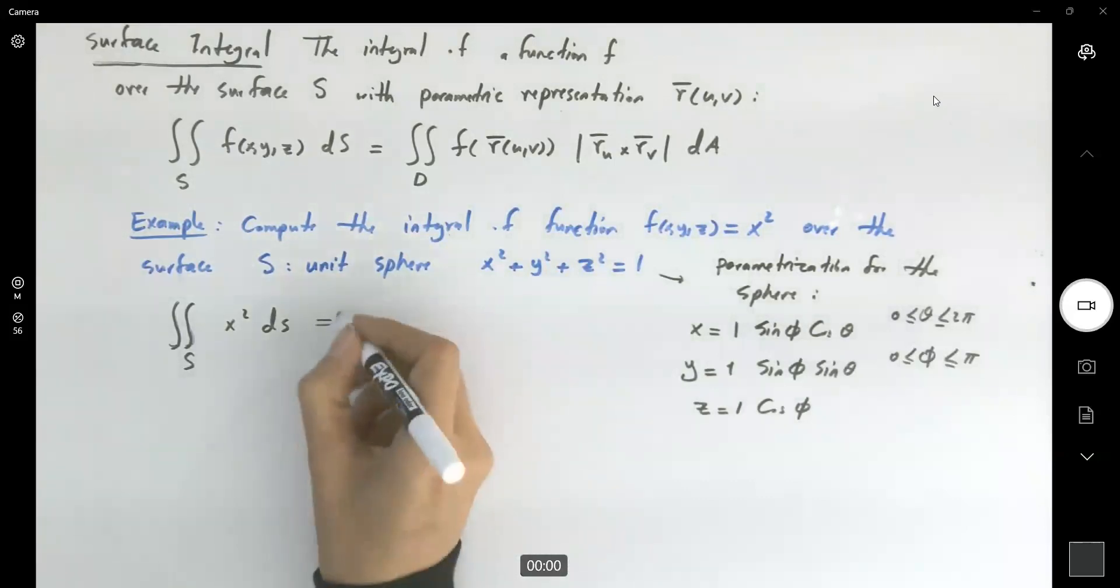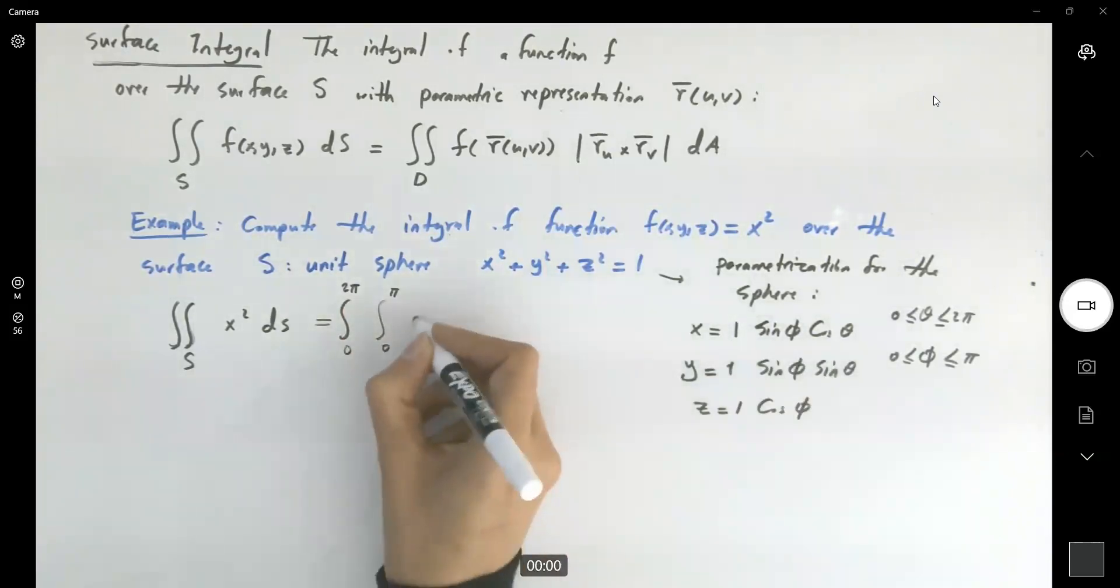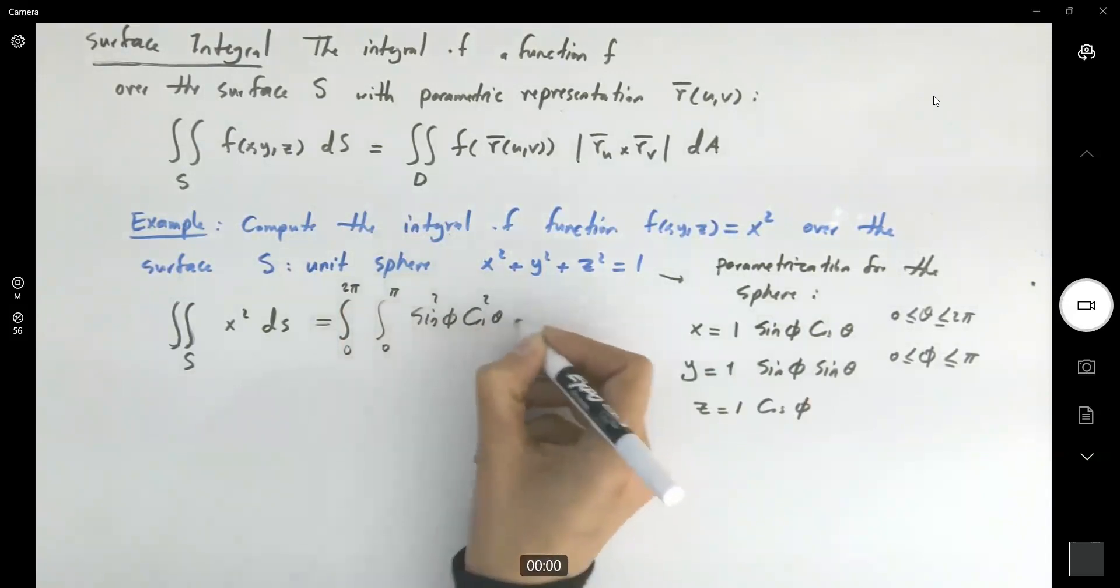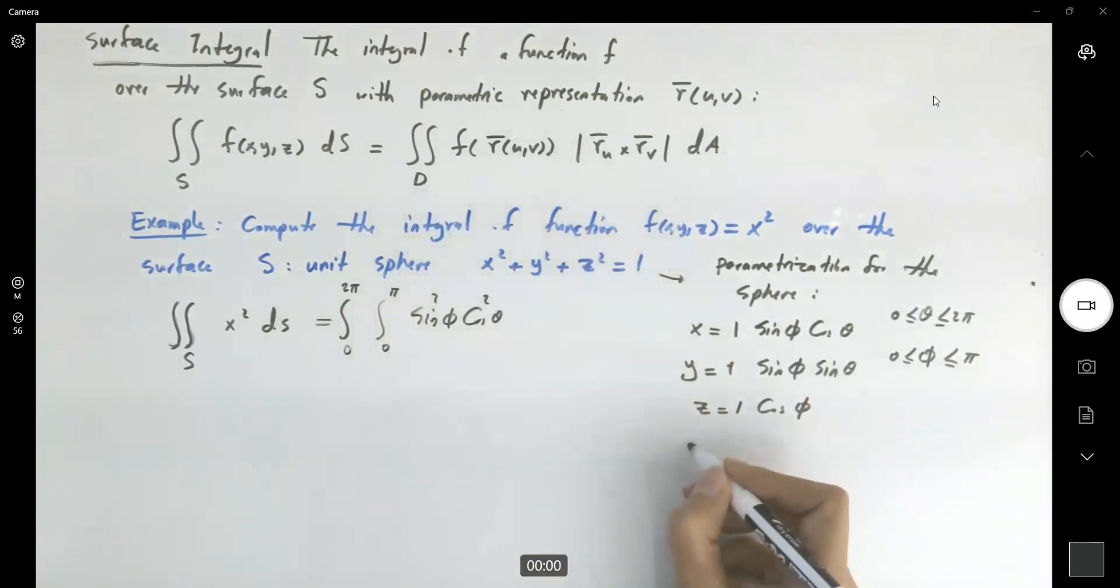So this becomes the double integral here. You can just substitute that right away: 0 to 2π, 0 to π. My x is sin φ cos θ, so I get sin² φ cos² θ, and I need the magnitude of the cross product.